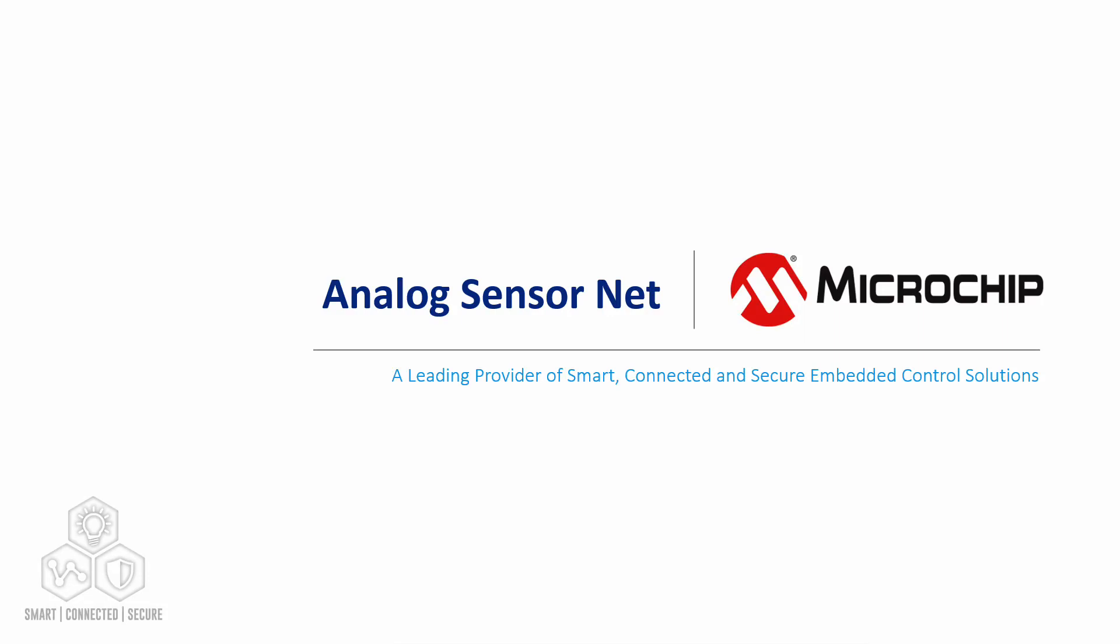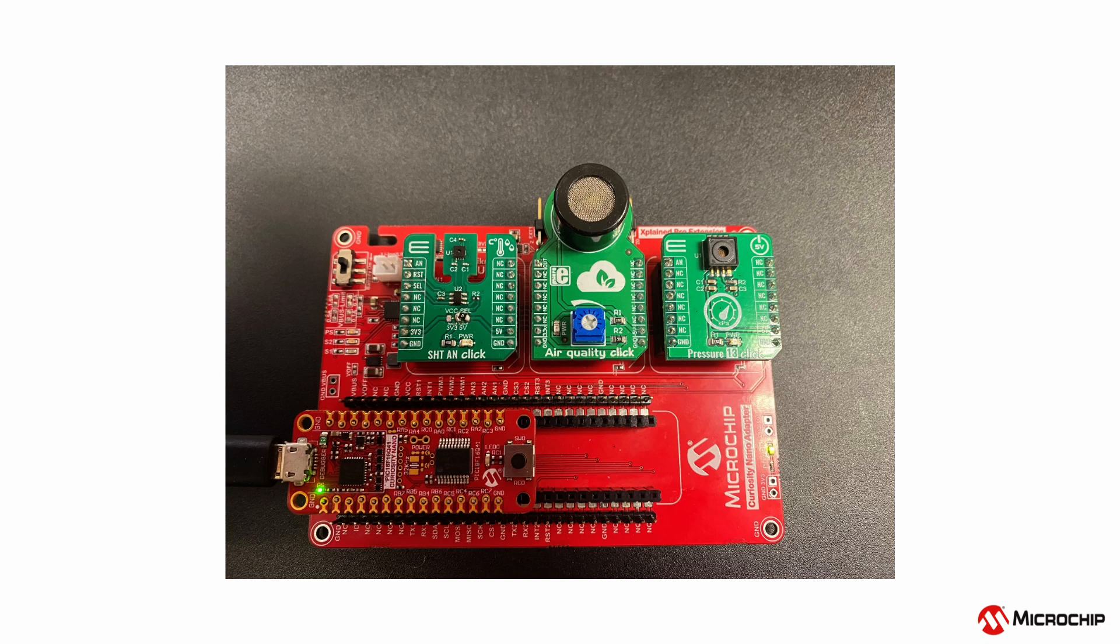A powerful use case for PIC and AVR microcontrollers is to use their advanced core independent peripherals to manage multiple analog signals. This can be seen with the analog sensor net application.